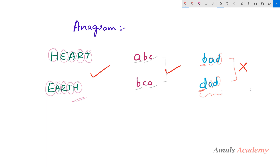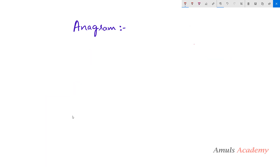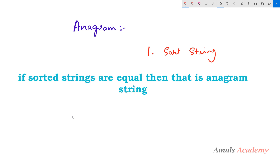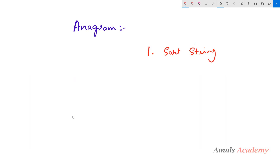So that's about the anagram of a string. Now we need to write the program. We can check anagram strings in different ways, but here we will use an easy method: first we will sort the string. When we sort both strings, if the sorted strings are equal then they are anagrams; if not, they are not anagrams.